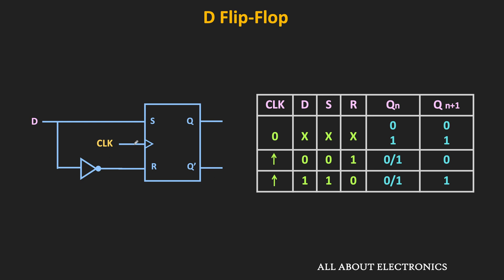As you can see, this D input is directly connected to the S input. And through the NOT gate, the same input is connected to the R input. That means when D is equal to 1, then S is 1 and R is 0. Similarly, when D is 0, then S is 0 and R is 1. So in this way, both S and R are never 1 at the same time.